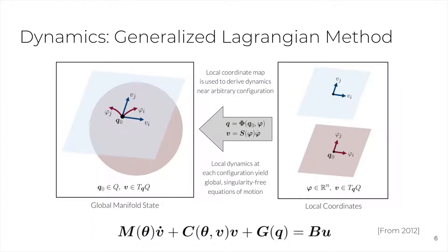In order to derive singularity-free equations of motion, we use the generalized Lagrangian method presented in From 2012. This method first derives dynamics in local coordinates in the neighborhood of an arbitrary point in the configuration manifold. Then, because this point was arbitrary in the first place, we are able to construct global equations of motion by considering the variation of this arbitrary point instead of that of the local coordinates.